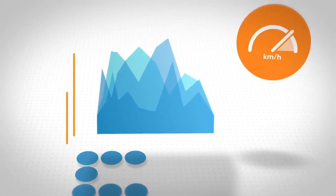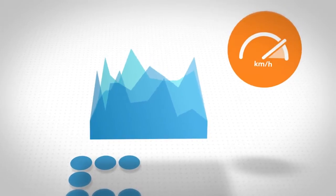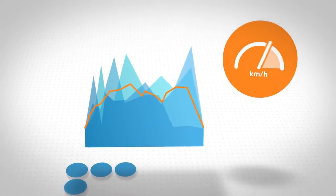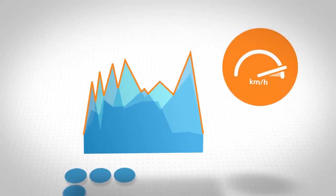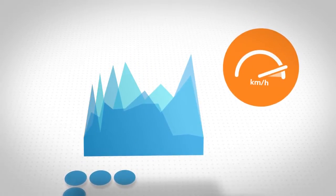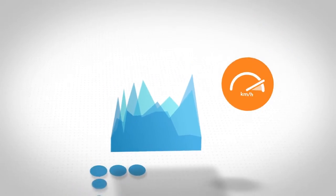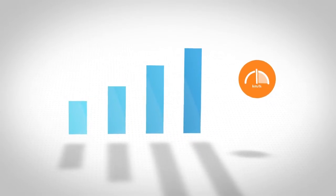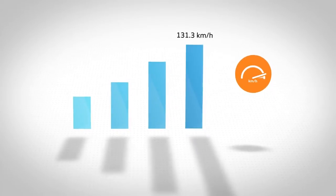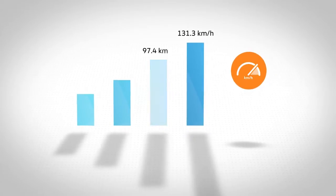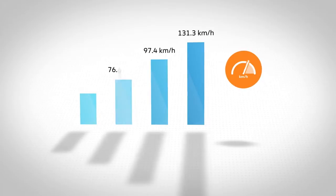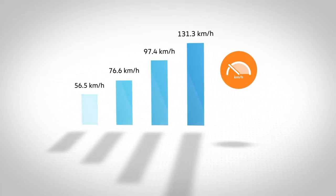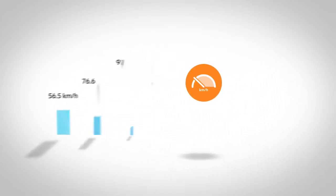The speed profile is also new, both in terms of average and maximum speeds. Based on this profile, the WLTP derives four specific phases: extra high, high, medium and low speeds.